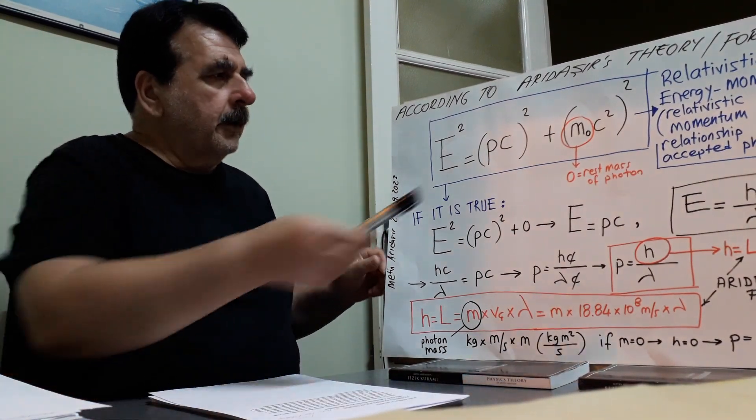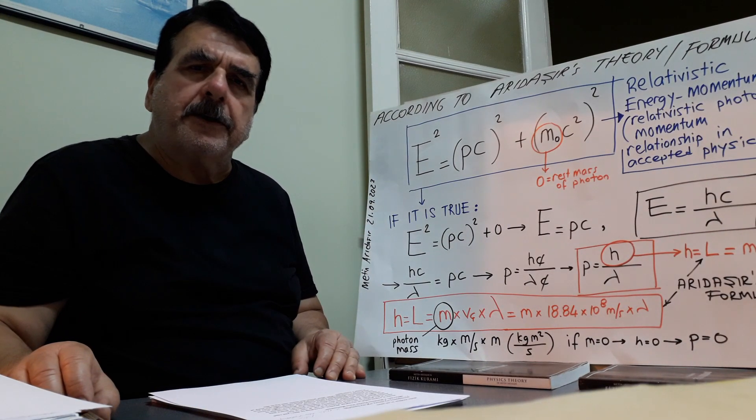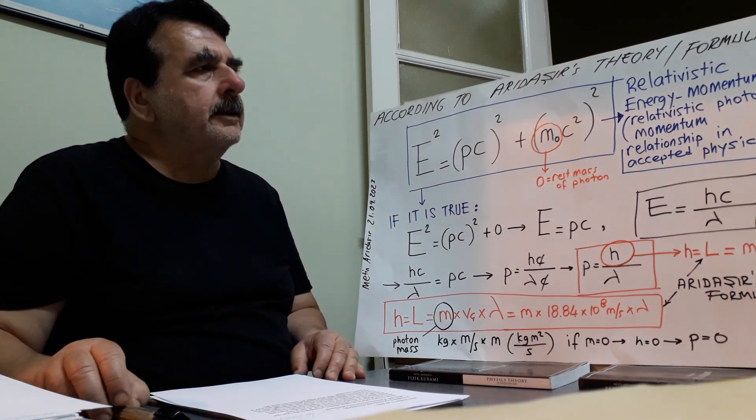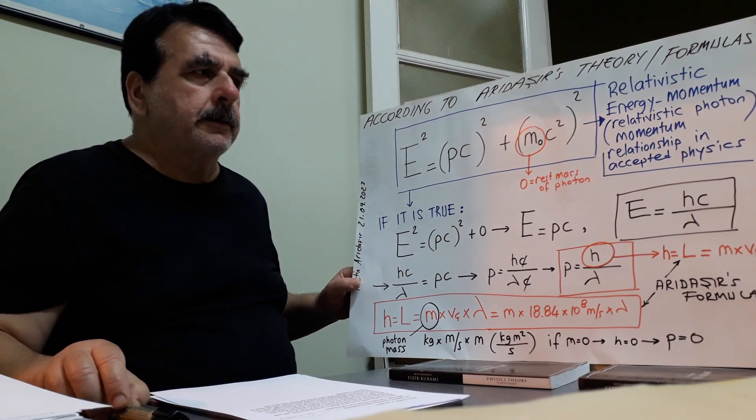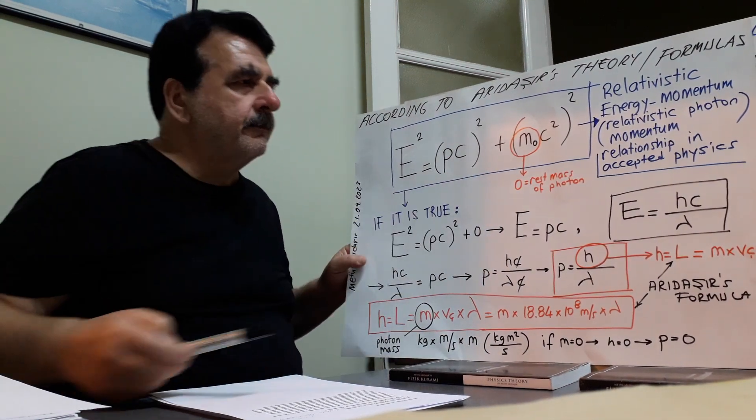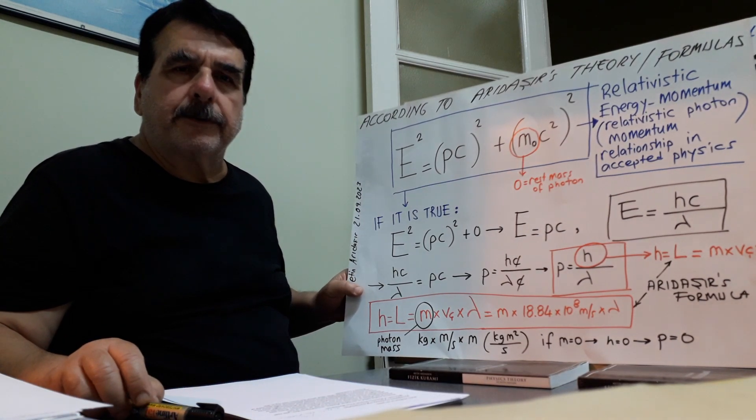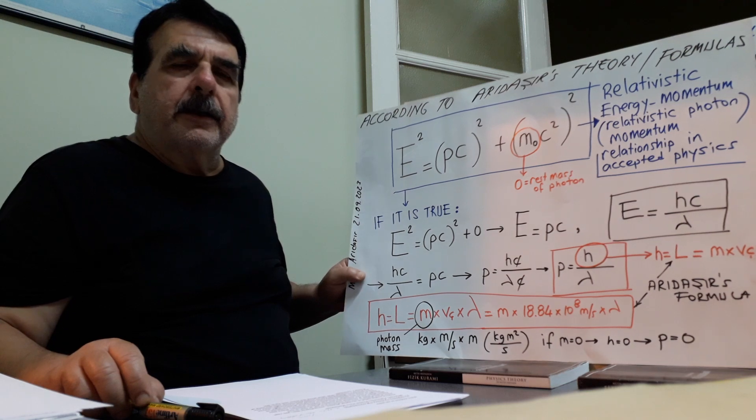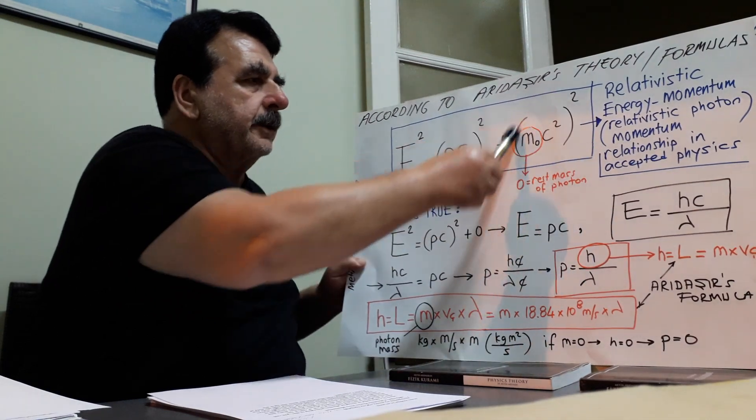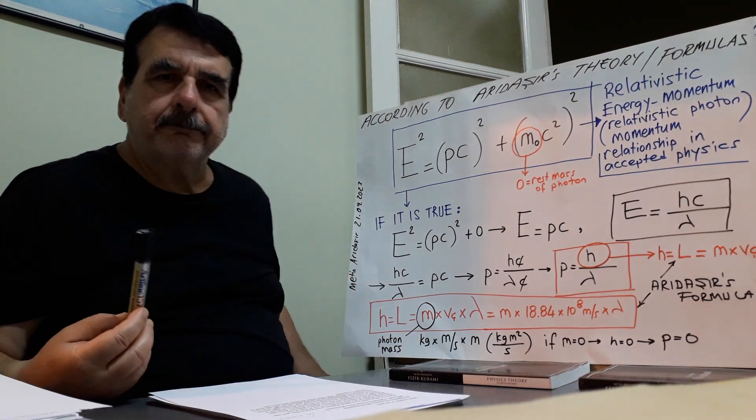Now, this is the template of relativistification. Relativistic energy momentum or relativistic photon momentum relationship in accepted physics. Here, because there is no rest photon and because rest photon's mass is zero, so this part of equation is zero.